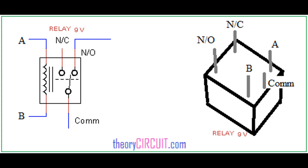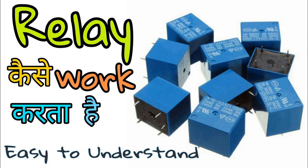Overcurrent Protection: Overcurrent relays are a common type of fault protection relay. They detect and respond to excessive current flowing in the circuit, which could result from a short circuit or an overload condition. The relay opens the contacts to interrupt the current flow and prevent damage. Overvoltage and Undervoltage Protection: Relays can monitor voltage levels and respond to overvoltage or undervoltage conditions. Overvoltage protection helps prevent equipment damage from voltage spikes, while undervoltage protection ensures that equipment operates within its specified voltage range.